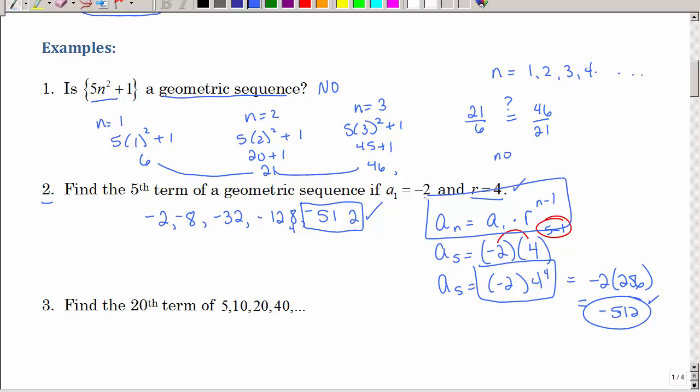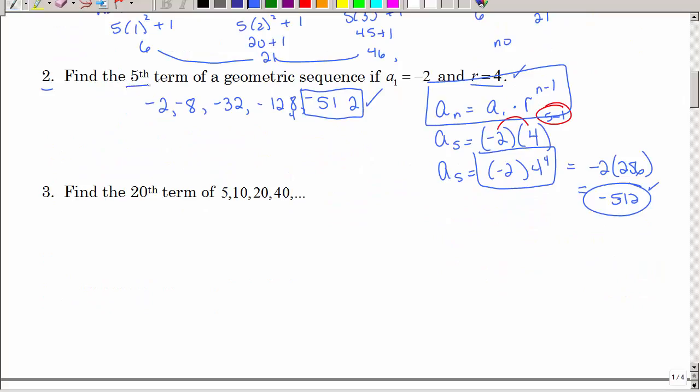Again, try to use the formulas. That's the whole purpose of these exercises to get used to these formulas so we can apply them later. So, number 2, we had the fifth term. We could write it out. The 20th term, I don't think I want to write it out. So, if I look at my formula, I need the first term and I need my common ratio. So, I need to find r. So, r is 10 divided by 5 is 2.